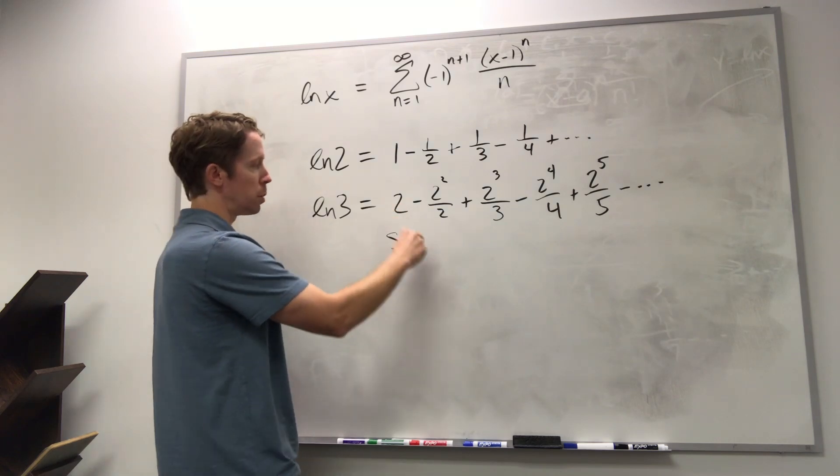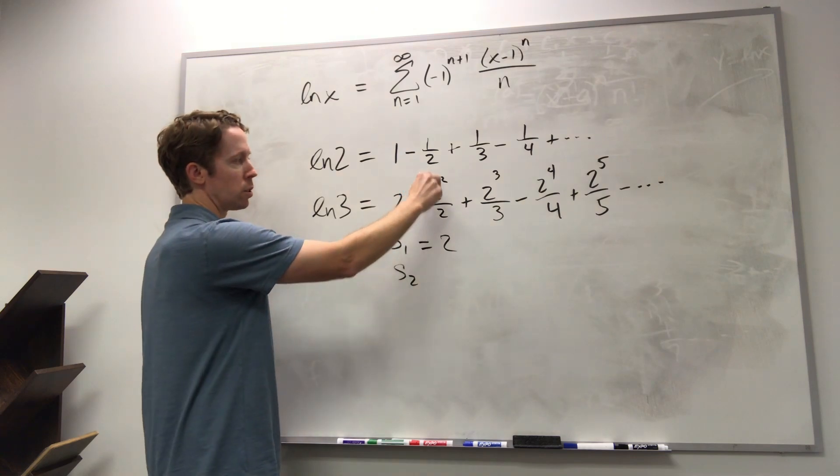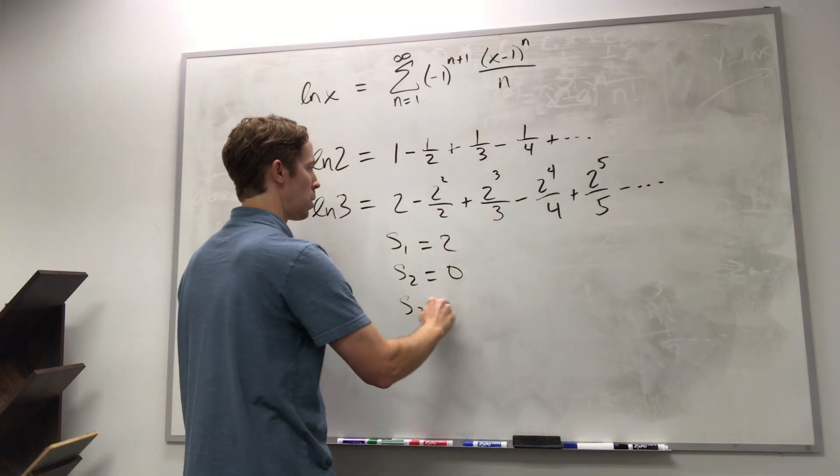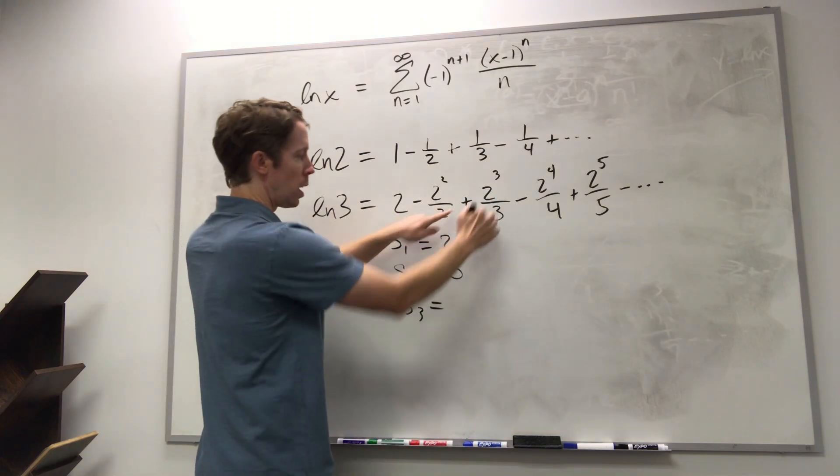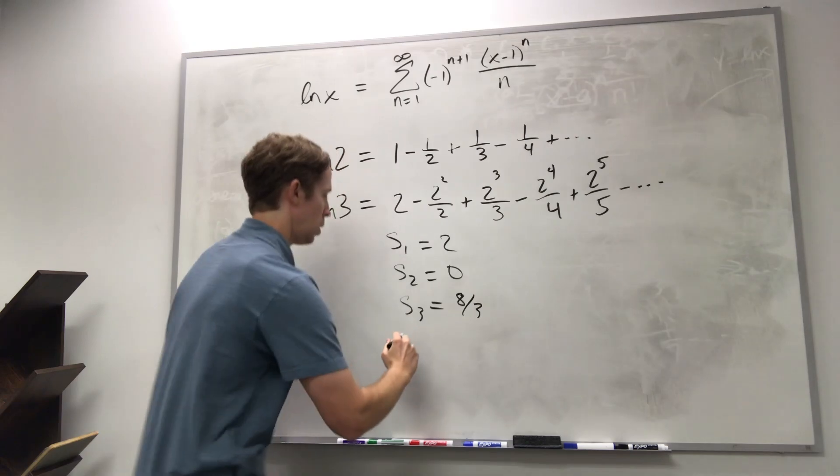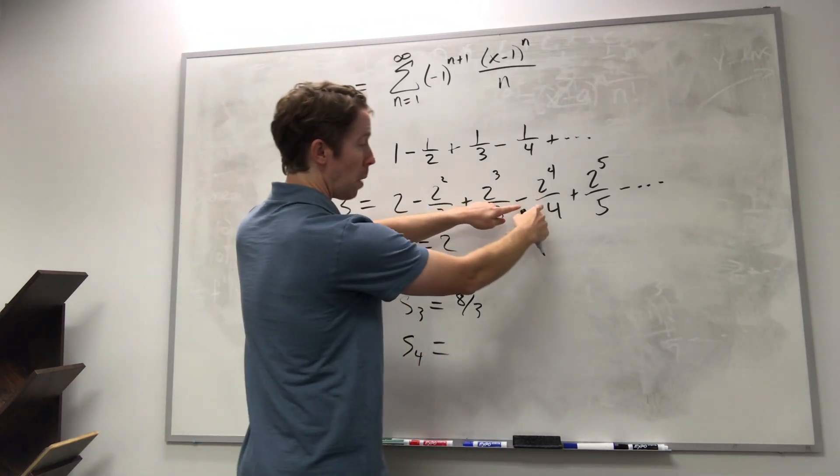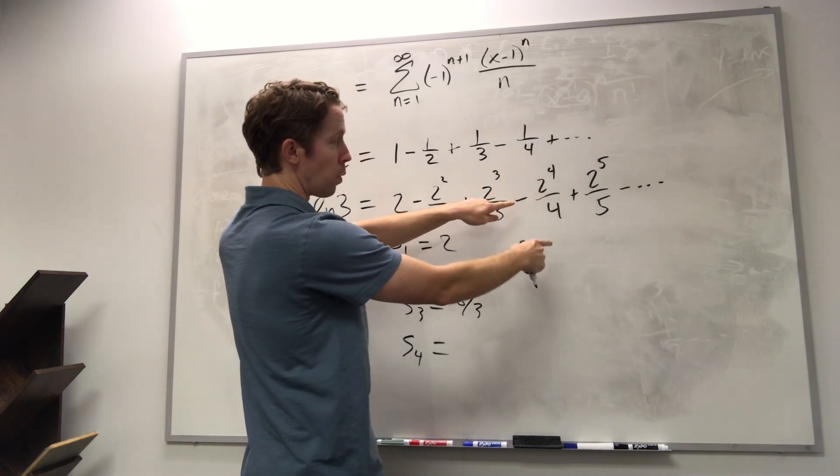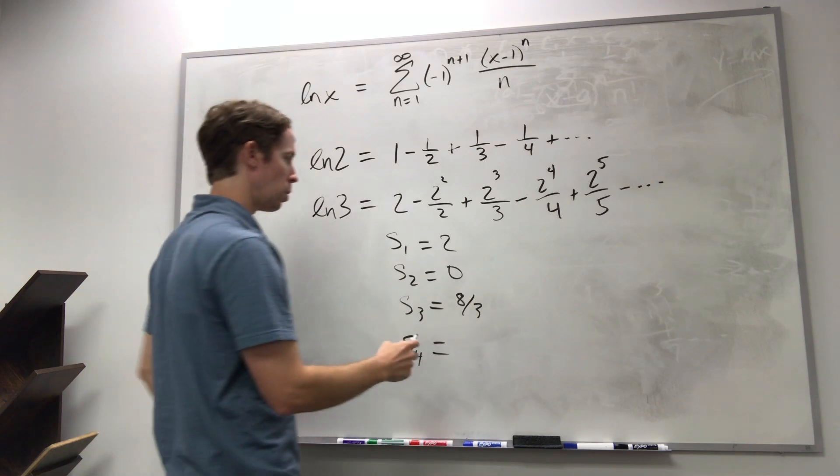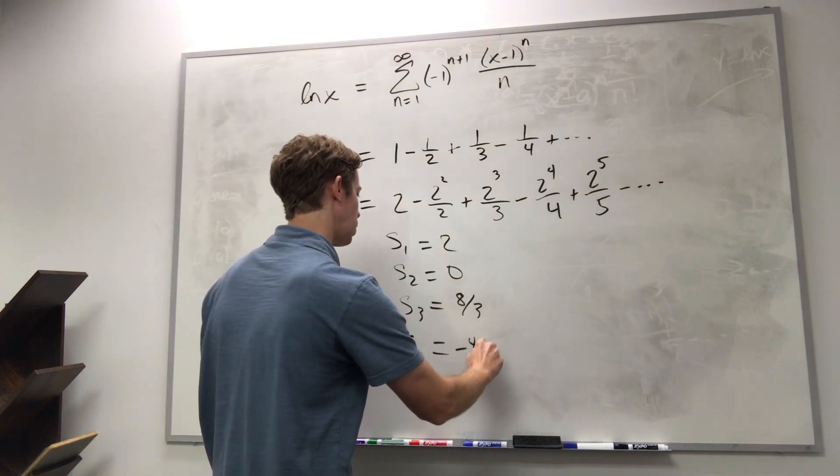So let's write these down real quick. The first partial sum would just be two, and then the second partial sum would be two minus two, so that's zero. The third one would be zero plus eight-thirds, so that's eight-thirds. The fourth one would be eight-thirds minus sixteen-fourths, so minus four. So that would be minus twelve-thirds, that gives me a minus four-thirds overall.